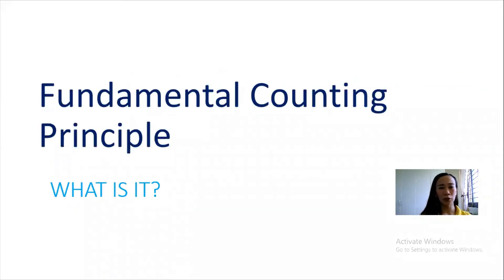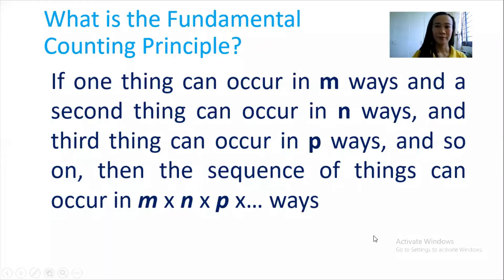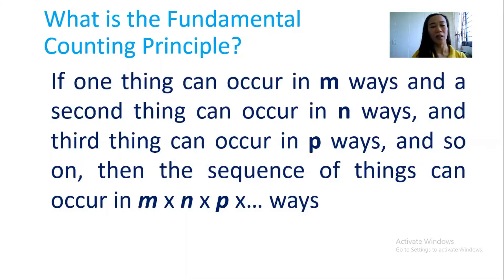So what is the fundamental counting principle? The fundamental counting principle tells us that if one thing can occur in M ways, and the second thing can occur in N ways, and the third thing can occur in P ways, and so on, then the sequence of things can occur in M multiplied by N multiplied by P, and so on, ways.